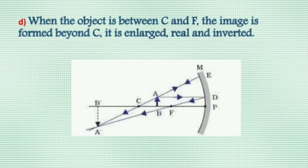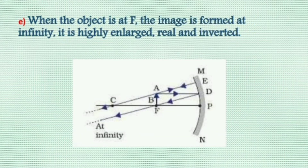Case four: object lies between focus and center of curvature. In this case, the image is beyond the center of curvature, real, inverted, and magnified — that is, bigger than the object. Case five: object placed at focus F. In this case, the image is real, inverted, and highly magnified. An example is the reflector of a torch.